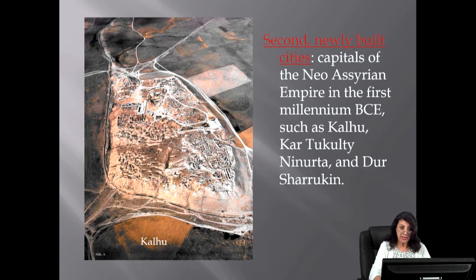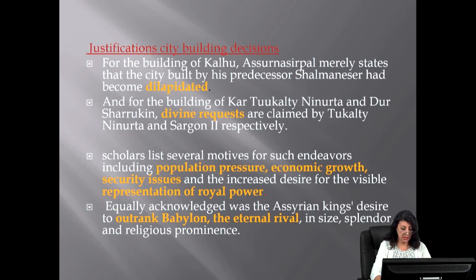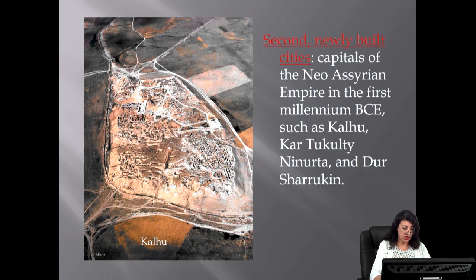The undertaking of building new cities was known in Mesopotamia as early as the Akkadian era. Sargon of Akkad is known for building his capital Akkad in the twenty-fourth century BCE. The Kassite king Kurigalzu I built Dur-Kurigalzu north of Babylon in the fourteenth century BCE. But the cities which gained the most importance for their majestic realization are those capitals of the Neo-Assyrian Empire in the first millennium BCE, such as Kalhu, Kar-Tukulti-Ninurta, and Dur-Sharrukin.